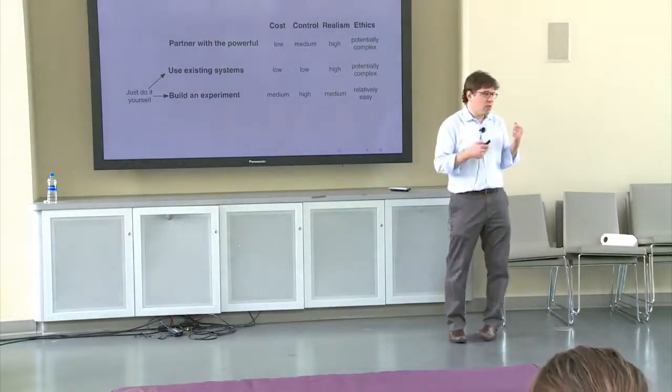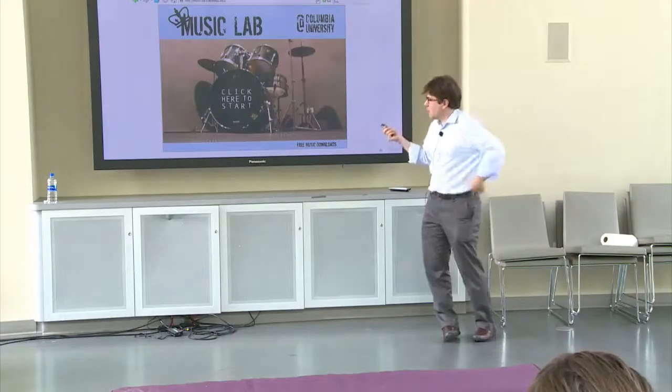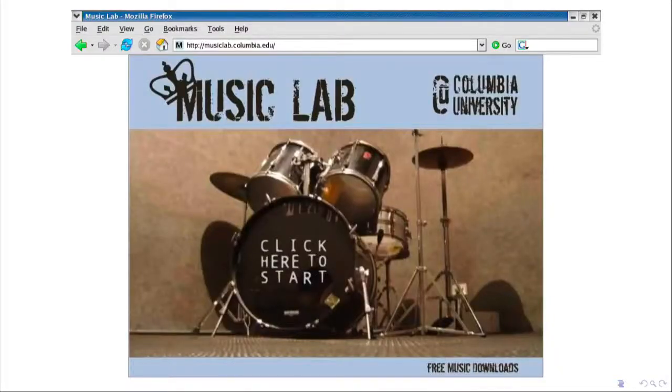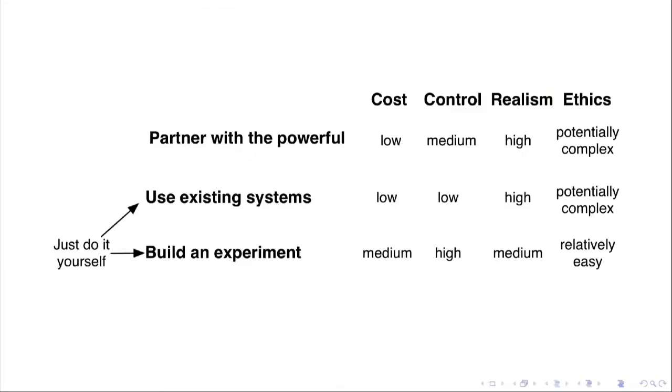The next strategy is to kind of build your own experiment. And this is one that I built along with some colleagues, Music Lab. I'll talk more about that in the next set of slides. But this involves creating your own website where people can come and download new music. This is what we did, creating our own website where people could download new music. So this is much harder in terms of cost, but you get much more control. Like we could have never embedded that experiment into an existing system because the kind of design we wanted to use, no system would have supported that design because that design doesn't make sense. And no partner would have likely allowed us to use that design because it's not a design that naturally aligns with the business interests of a partner.